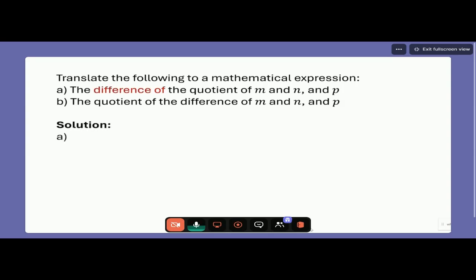Looking at our solution here, we start with the difference of something. The key here is we know that means to start off, that two things are going to be subtracted. So there's my minus sign in red, matching up with the fact that this is going to be the difference of two things.